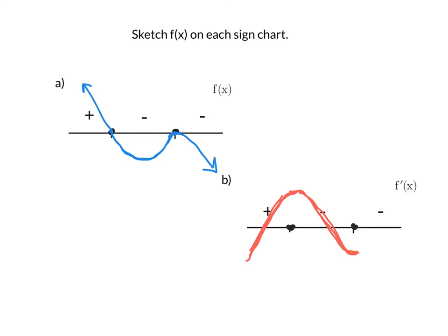On the last interval, again, it's negative. So even though it flattened out for just a second there, it's going to continue to decrease for the rest of its function. So this is a possible graph of f of x.